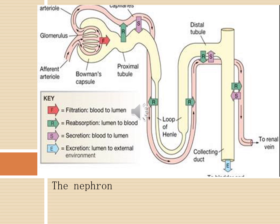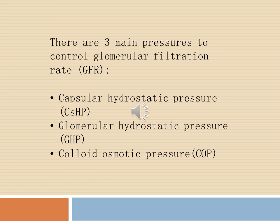This diagram shows the nephron, which is the functional unit of the kidney. Filtration occurs at a place known as the renal corpuscle, which consists of the glomerulus and also Bowman's capsule. There are three main pressures that control glomerular filtration rate in the renal corpuscle: capsular hydrostatic pressure, glomerular hydrostatic pressure, and also colloid osmotic pressure.